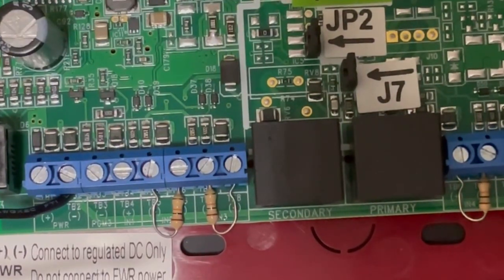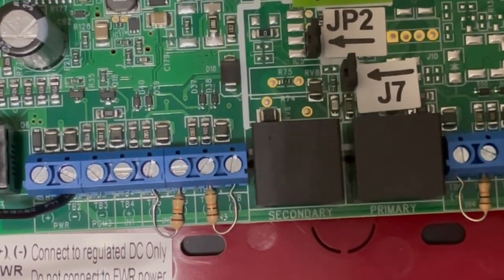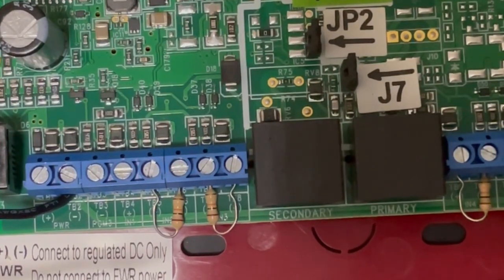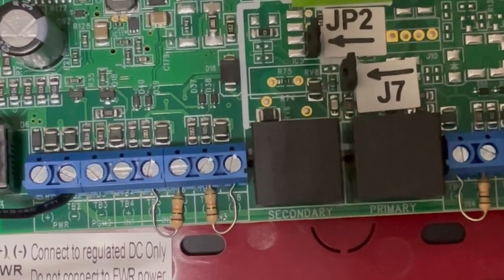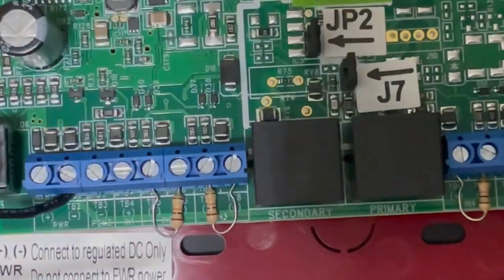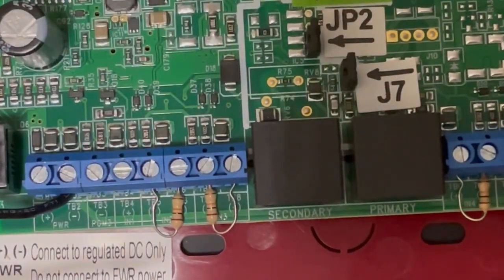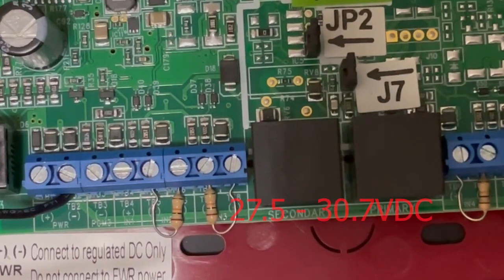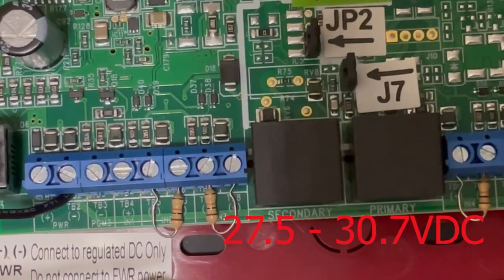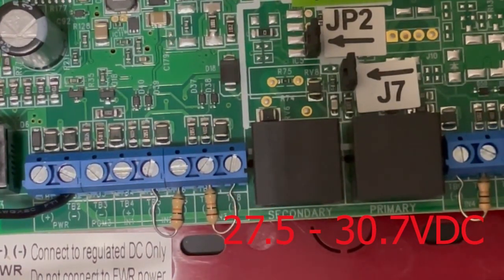Hello everybody, this is Jesse from Napco Tech Support. Today we're going over the SLE-Fire-VR voltage regulator, which is meant for our I radios—the dual and sole path capable fire radios. When you connect it to an FACP that's above 27.5 volts, it's required to be connected to regulated DC, not full wave rectified.